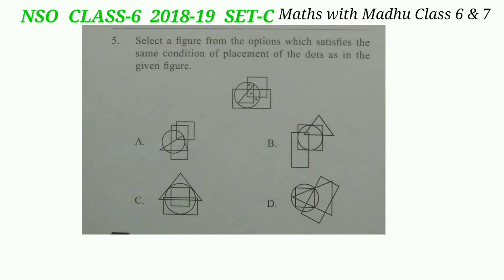Question 5: select a figure from the options which satisfies the same condition of placement of the dots as in the given figure. The upper dot is within the square and the circle; the middle dot is within the triangle, square, rectangle, and also within the circle; and the lower dot is within the circle and rectangle. We have to find the same arrangement, so our answer will be option D.